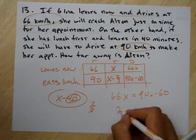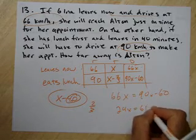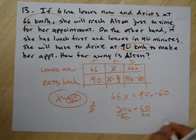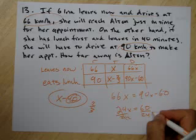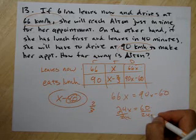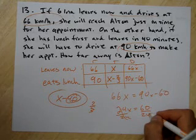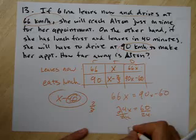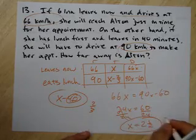66X equals 90X minus 60. Subtract 90X from both sides. You get negative 24X equals negative 60. Divide both sides by 24. What do I get? 24 goes into 60 twice, which is 48 with 12 left over, so two-and-a-half times. So X is two-and-a-half.